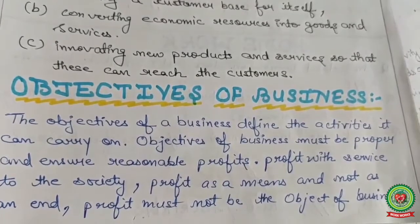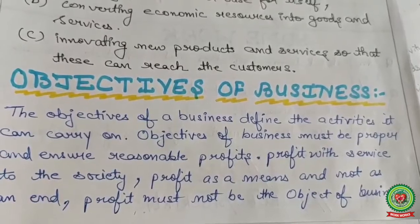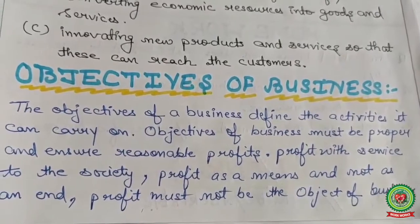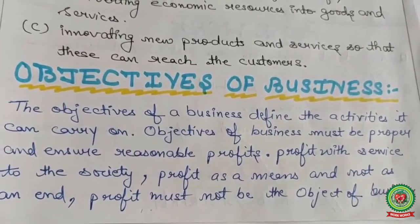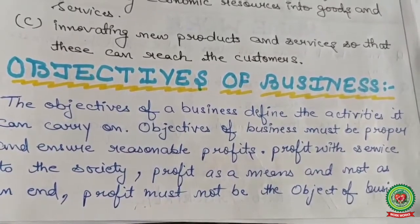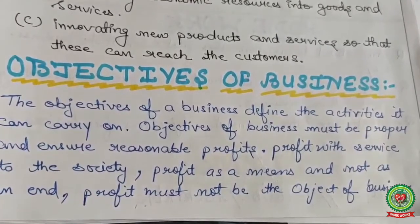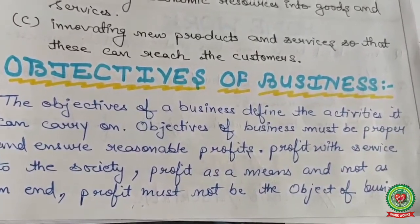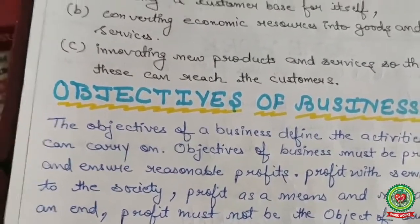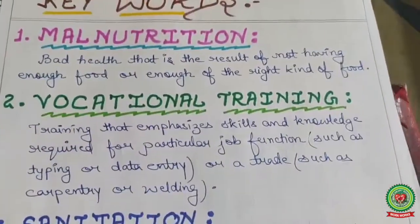Business objectives must be proper and ensure reasonable profits — profit with service to society. Profit with service to society means: expect profit, but only after satisfying consumer needs and wants. Profit is a means, not an end; profit must not be the sole objective of the business. Multiple objectives are required for business. Here are some keywords I'm going to use in my lecture.